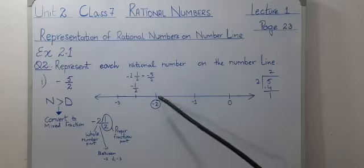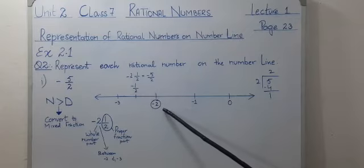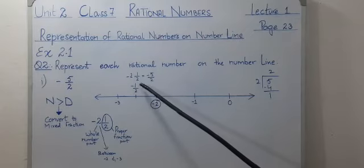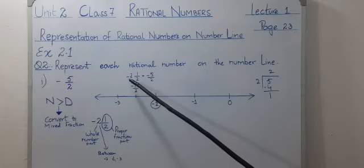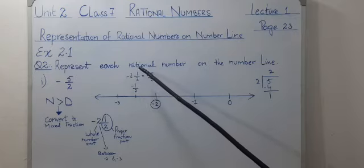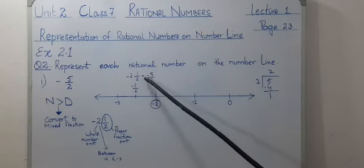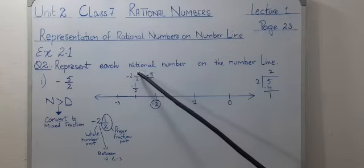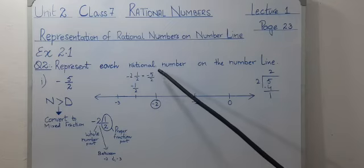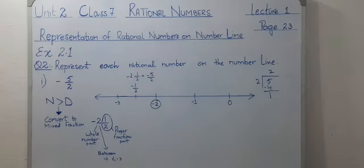Right, girls? So now you can see minus 2 whole number, 1 by 2. When we convert into improper fraction, 2 times 2 is 4 plus 1, which is 5. It means minus 5 by 2 plots between minus 2 and minus 3.